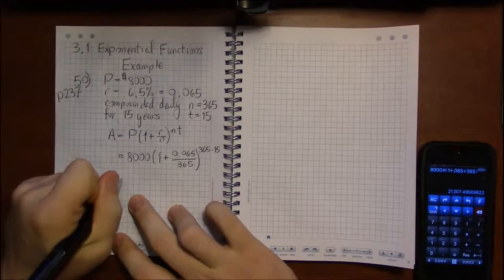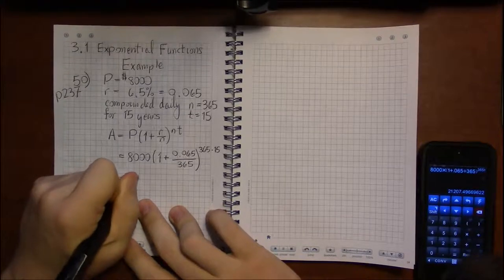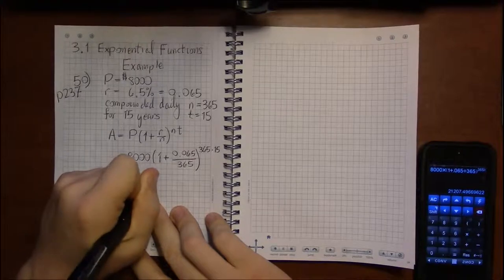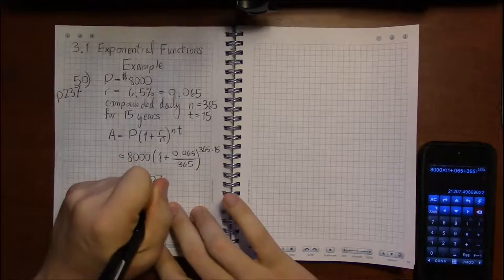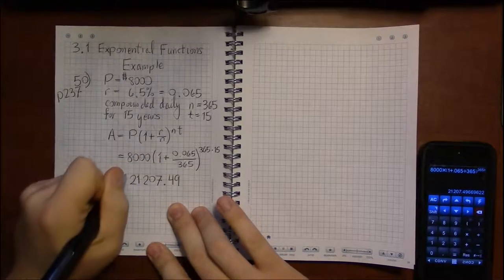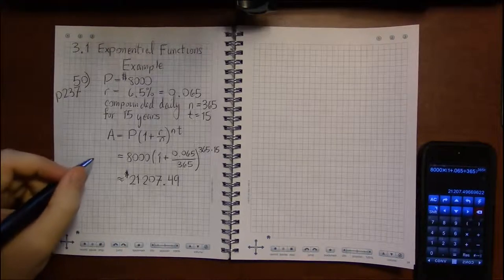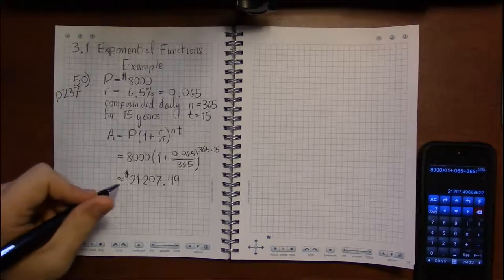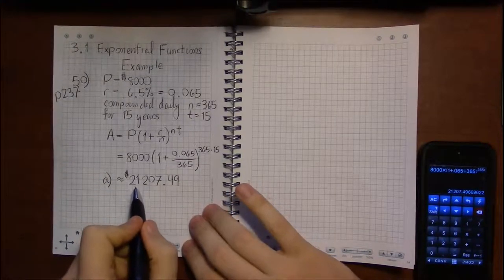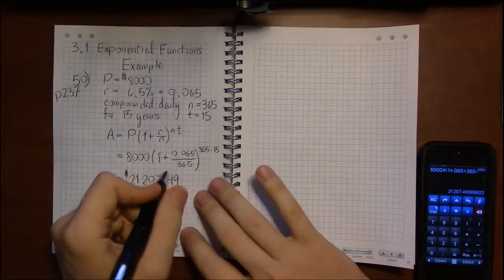And what I get out is $21,207.49 if I round down as a bank would against your favor. So the final amount after 15 years is going to be $21,207 roughly.